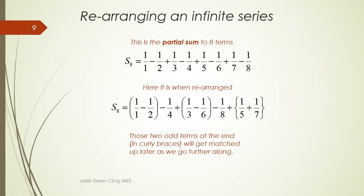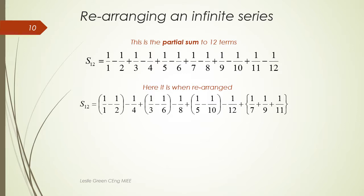So let's try that. We try S12. The term 1 over 5 did indeed get moved into the main pattern. But now we have three left over terms rather than just two.